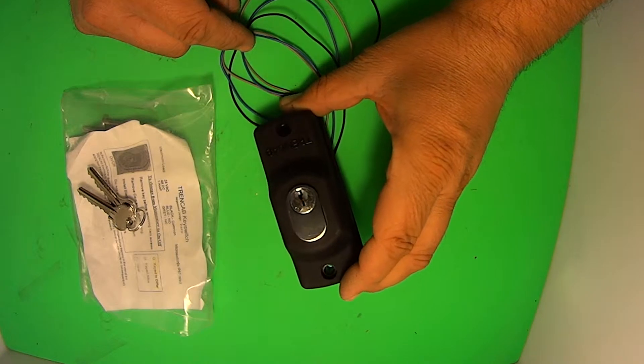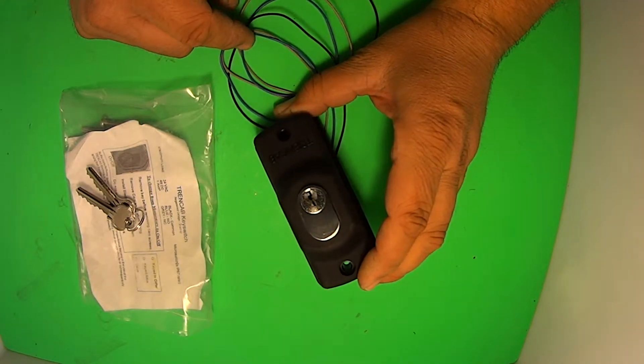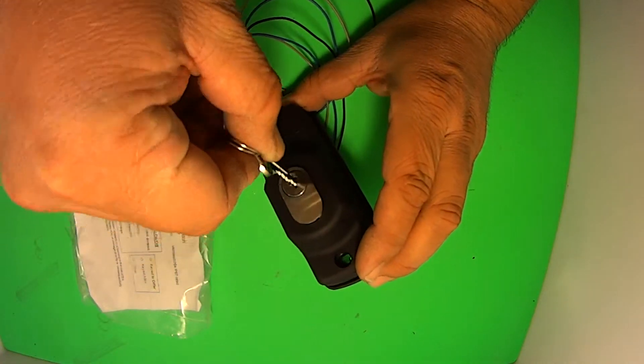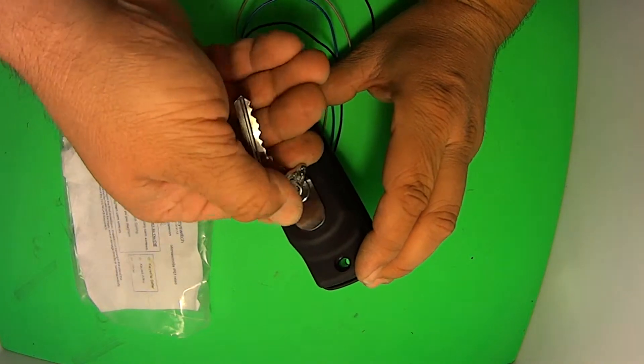What's so good about this particular key switch is it comes in two functions. The first one is spring on and off, which I'll demonstrate here. This is how it comes standard. You put your key in, you turn it, spring, and it activates the switch.